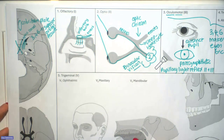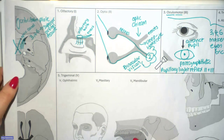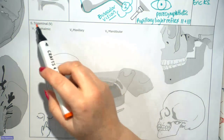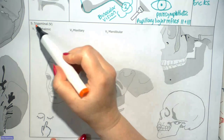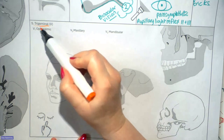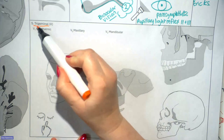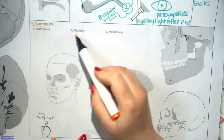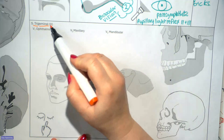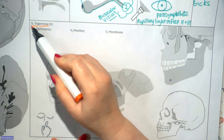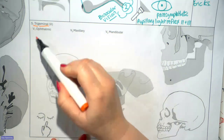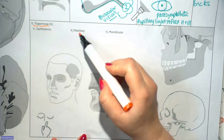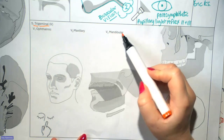Next is the trigeminal nerve, which has three divisions — that's where it gets its name. The three roots are V1, V2, and V3. The V refers to the fact that it's the fifth cranial nerve. V1 is also called the ophthalmic, V2 the maxillary, and V3 the mandibular. All of these have sensory components, and only V3 also has a motor component.